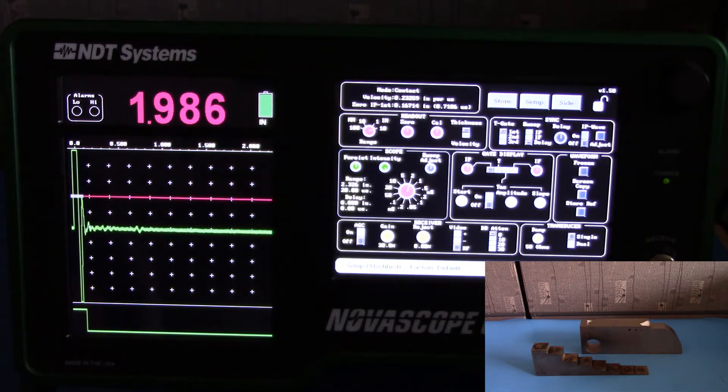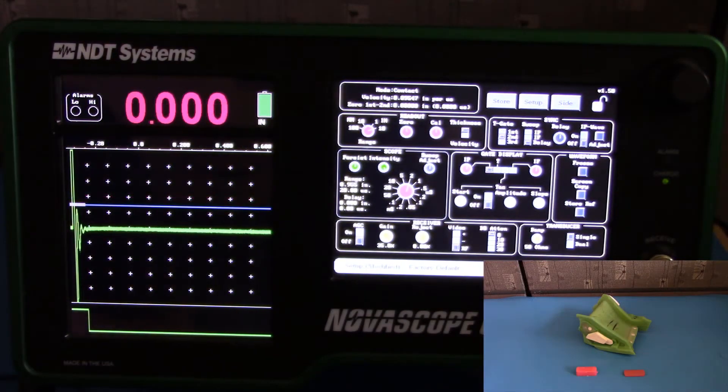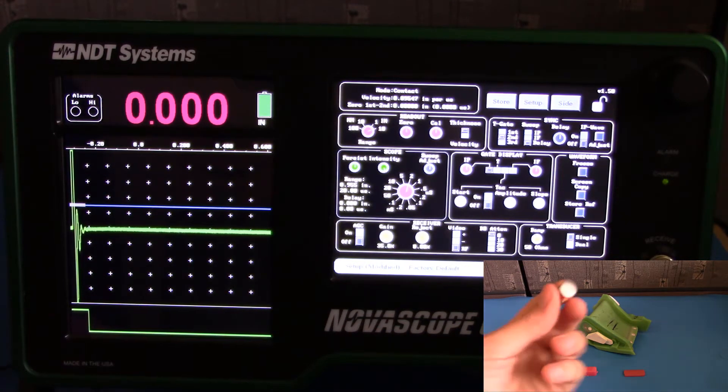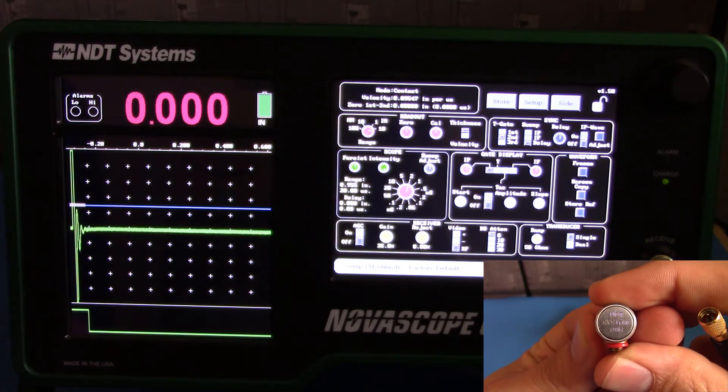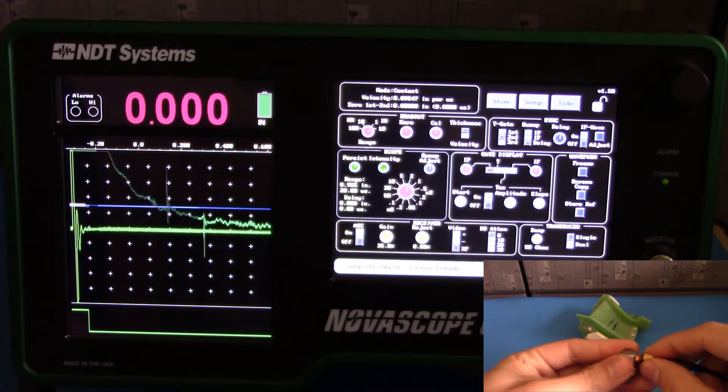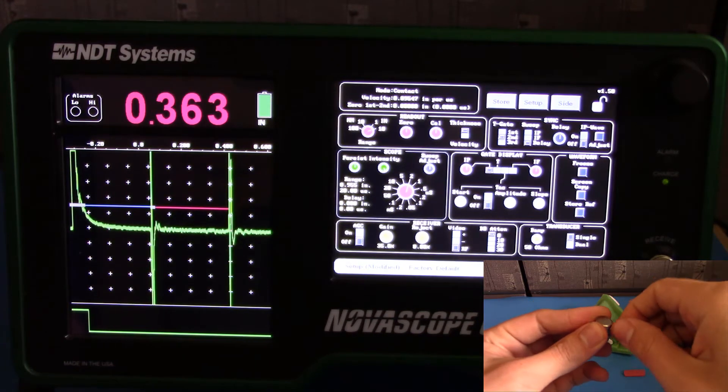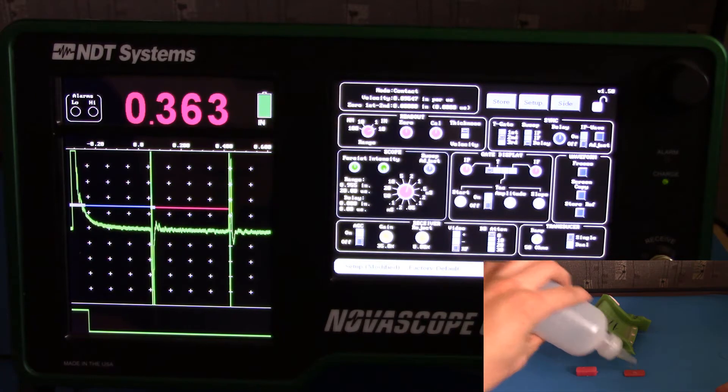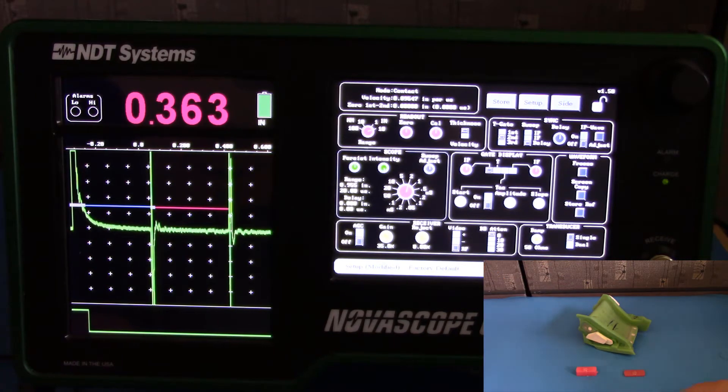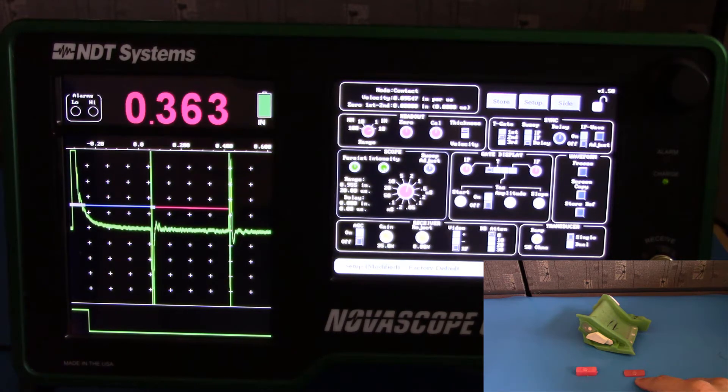Let's go ahead and look at delay probes. Setting up a delay line probe is similar to setting up a contact probe. In this case, we have an NDT Systems D11. We're going to connect it to the probe cable. We'll apply a couplant to our samples. In this case, we have a 0.1-inch wax shim and a 0.3-inch wax shim.